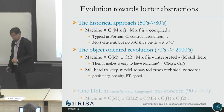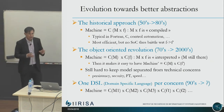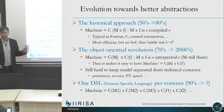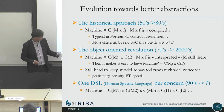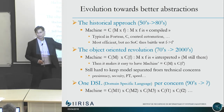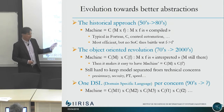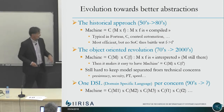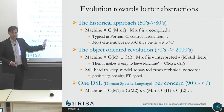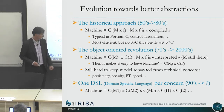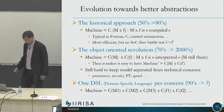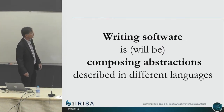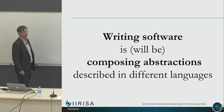Starting in the 90s, people tried to keep better separation of concern by having one language per concern and having the composition at runtime, so you can change one without changing the others. My point is that writing software will be composing abstractions and models described in different languages.